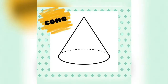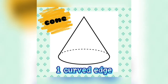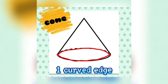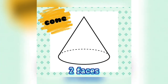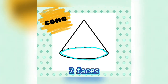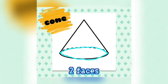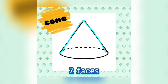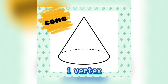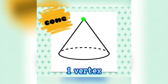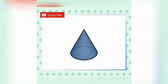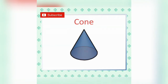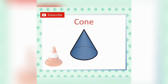First: Cone. It has one curved edge. It has two faces — one, two. It has one vertex.